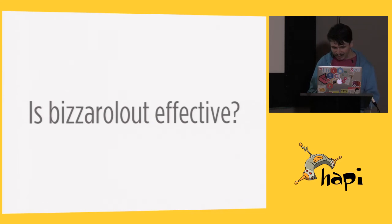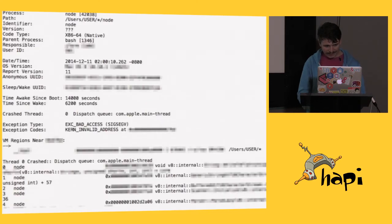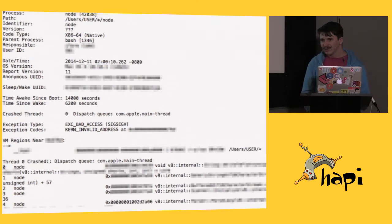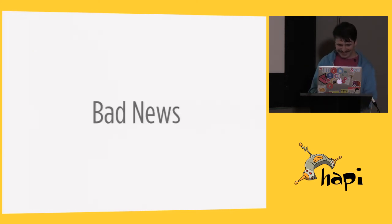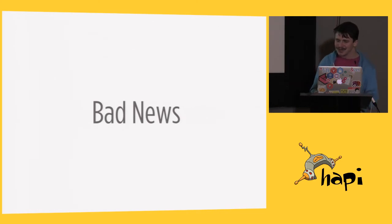Is BizarroLout effective? Well, within the first 10 seconds of turning it on, I found a denial-of-service issue with a process.nextTick in a pretty popular module. And last night I have a repeatable SegFault in V8 core — that was a fun 2 a.m. adventure. Here's the bad news, though: it's not finished yet. It's far from ready for production use. I'm working on it, but I have a day job, so I don't have a vast amount of time to put into this.